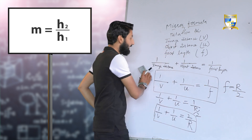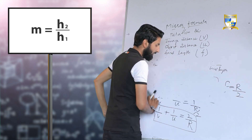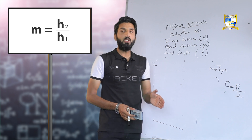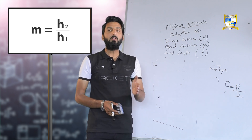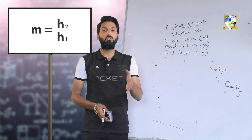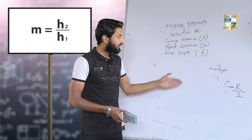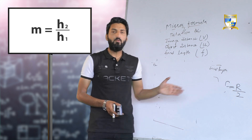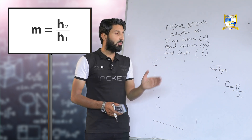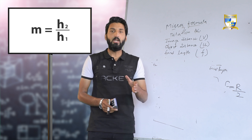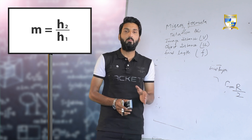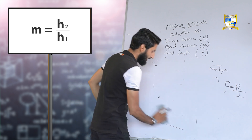The mirror formula gives us the position and nature of the image. However, if we need to calculate the actual size of the image, we cannot do that with the mirror formula alone. The actual size of the image is calculated using the formula of linear magnification.